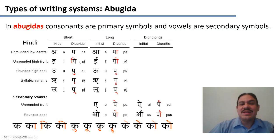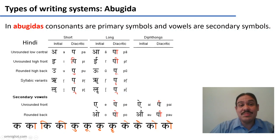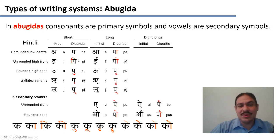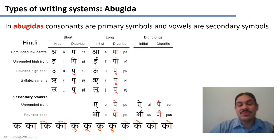Not only are the vowels like small secondary symbols that accompany the consonants, but sometimes they can even come before the consonant — like in the case of the short E, which graphically comes before the consonant symbol, even though it is pronounced after it. There are independent symbols for the vowels, but when they occur next to a consonant, they take this secondary form.